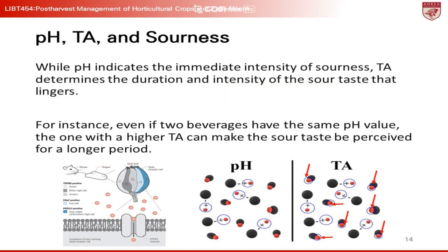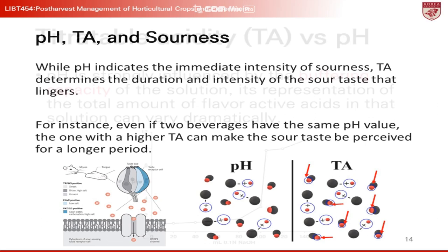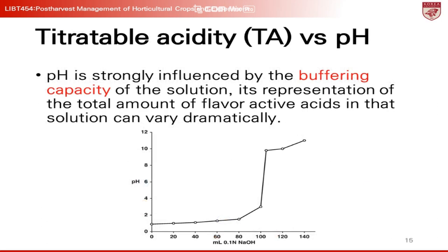TA can be a better indicator for sourness than pH. While pH indicates the immediate intensity of sourness, TA determines the duration and intensity of the sour taste that lingers. For instance, even if two beverages have the same pH value, the one with a higher TA can make the sour taste be perceived for a longer period. Since pH is affected by the solution's buffering capacity, TA can provide a more accurate representation of a solution's total acid content, which is a major contributor to flavor.